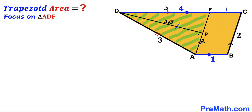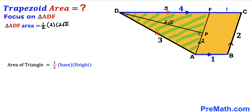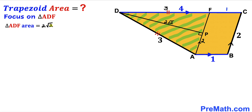Now let's calculate the area of triangle ADF. Recalling the area formula: Area = ½ × base × height. The base of triangle ADF is 2 units and the height is 2√2. So the area = ½ × 2 × 2√2. The 2 and ½ cancel, giving area of triangle ADF = 2√2 square units. This is equation 1.